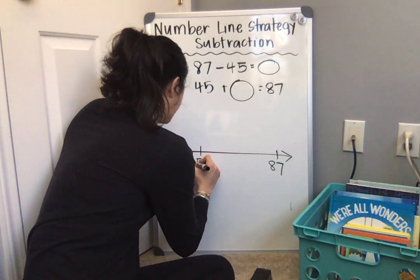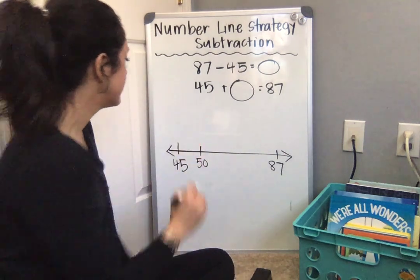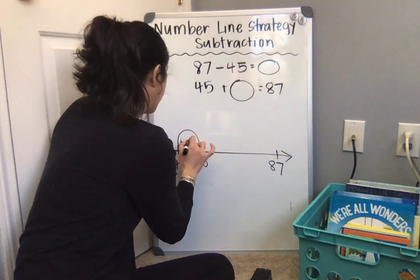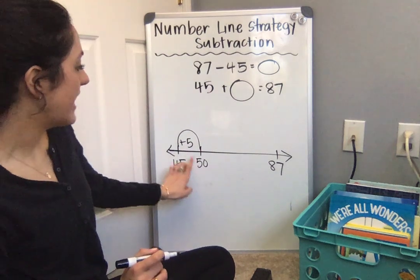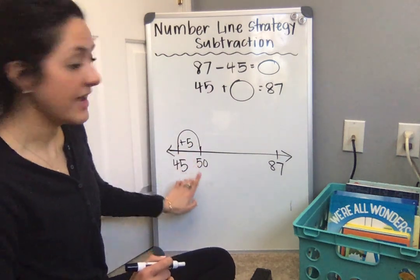You're right, it's 50. So we want to get to 50. I know that 45 plus 5 more gets me to 50. 5 plus 5 is 10. 45 plus 5 is 50.